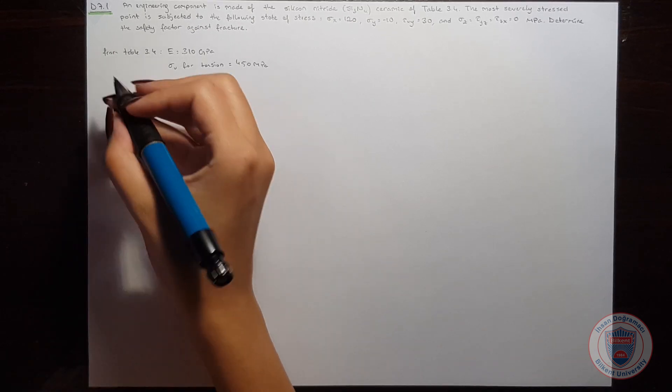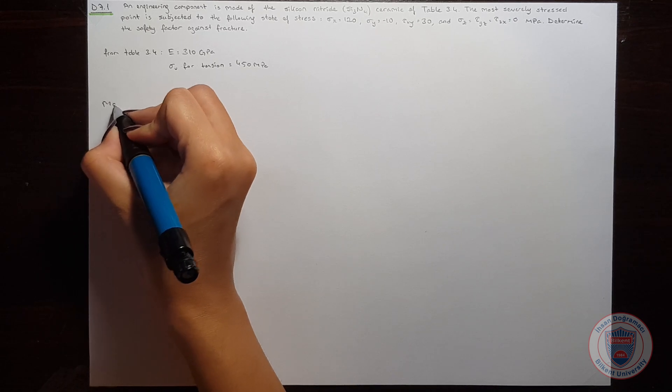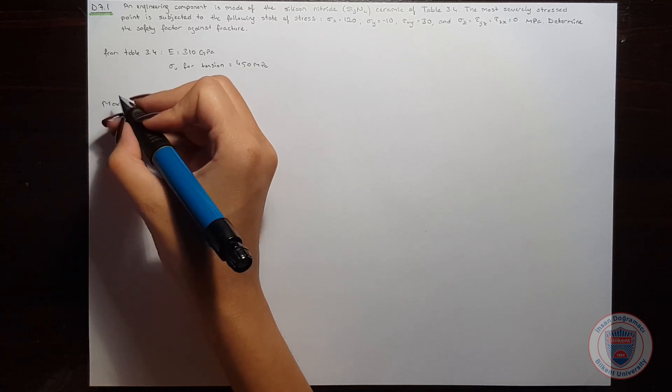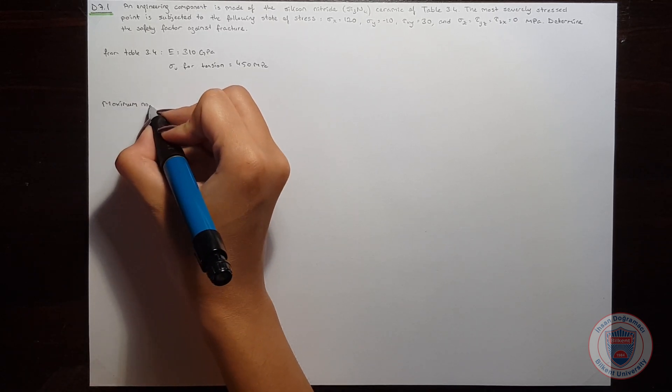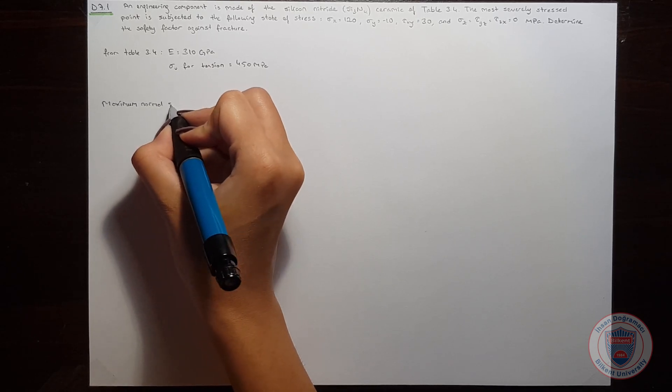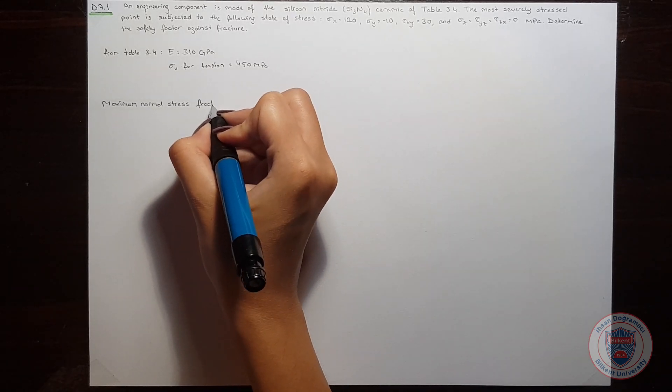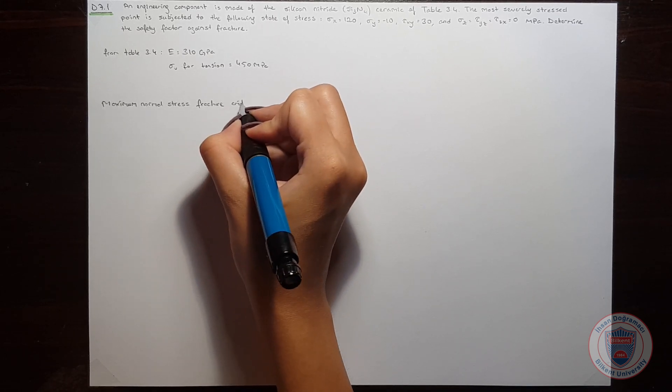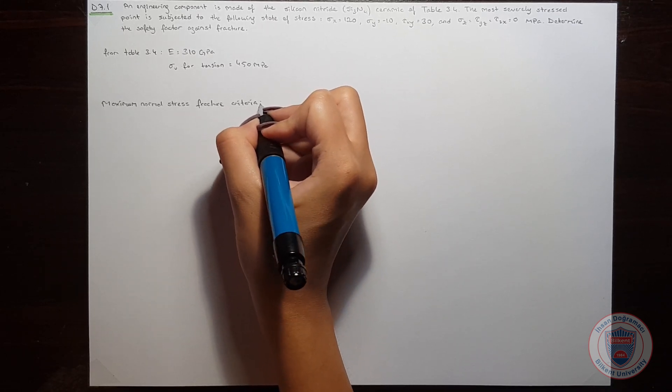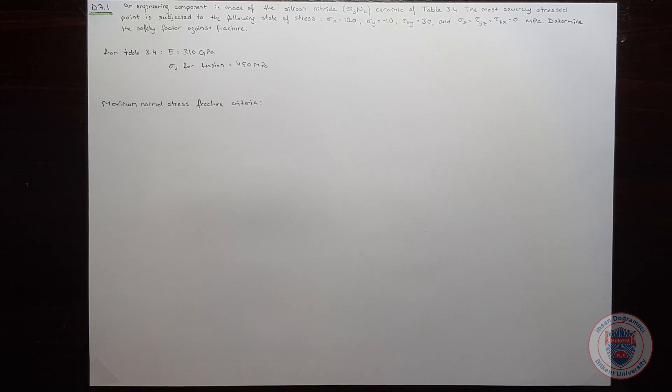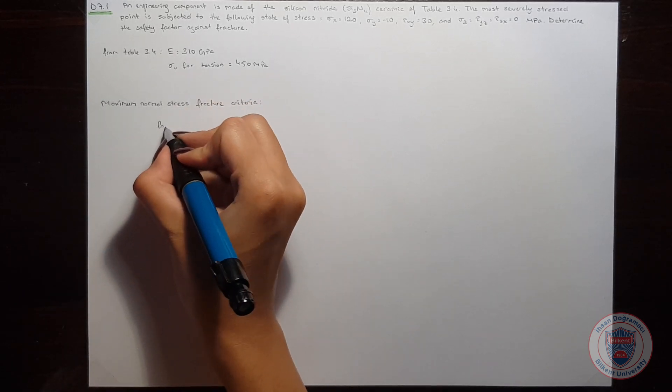To find the safety factor against fracture, we will use the maximum normal stress fracture criteria. According to this criteria, we know that for brittle materials,